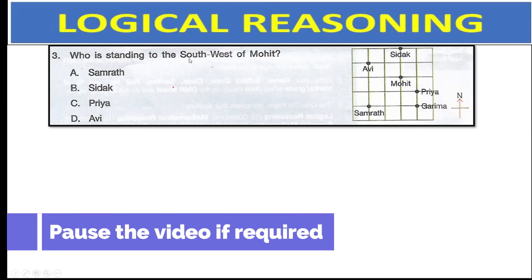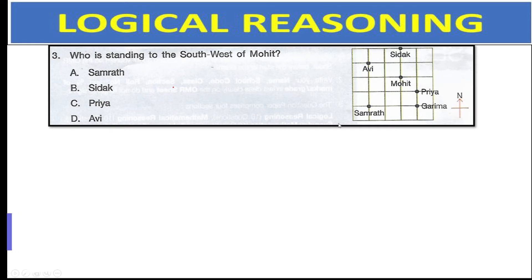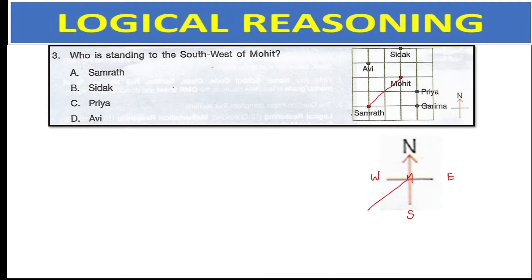Who is standing to the southwest of Mohit? Here is the figure. Look at the directions: whenever you are facing north, to your right is east, opposite to north is south, and left of north is west. Mohit is standing here, and his southwest would be here. The person on the southwest of Mohit is Samarth, which is option A.